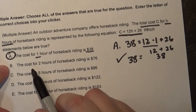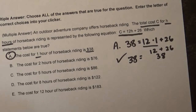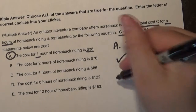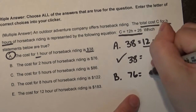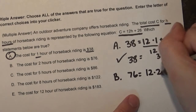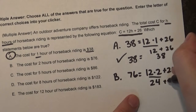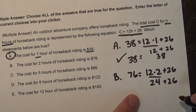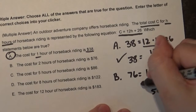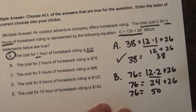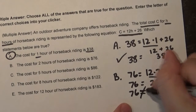It says the cost for two hours is $76. Again, I'll plug this in. So $76 equals 12 times two plus 26. Order of operations: 12 times two is 24; 24 plus 26. I got a little bit tricked there because I wanted to say it was true, but 76 does not equal 50. So B is not right.